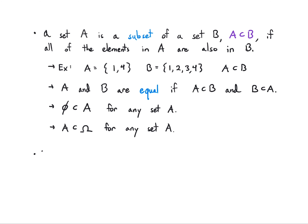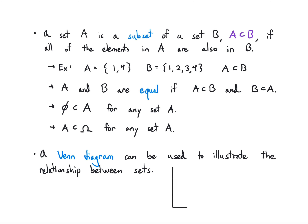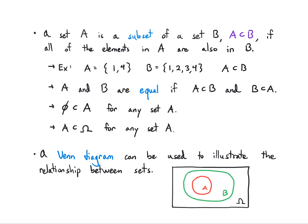One nice way to illustrate these relationships is with a Venn diagram — they just illustrate relationships between sets. Let's draw the universal set using a rectangle, then a green oval for B and a red circle for A. A is inside B, so A is a subset of B. And B is inside the universal set, so B is a subset of the universal set. A is obviously also a subset of the universal set. I could write this mathematically or draw it, and in some cases one or the other will be more useful.